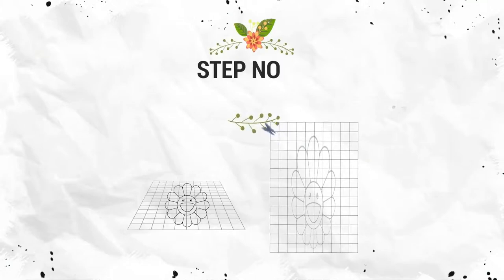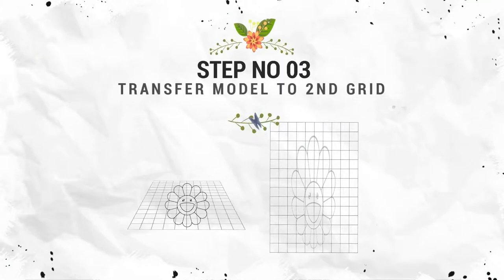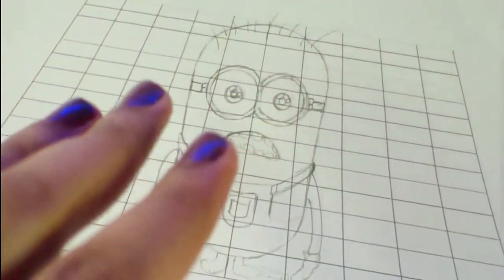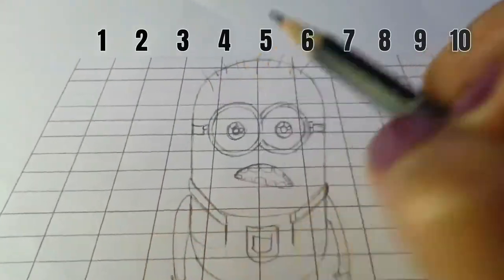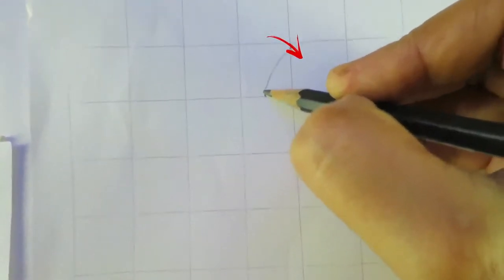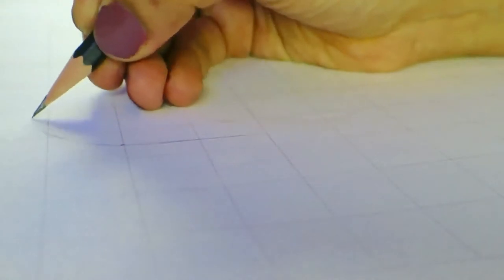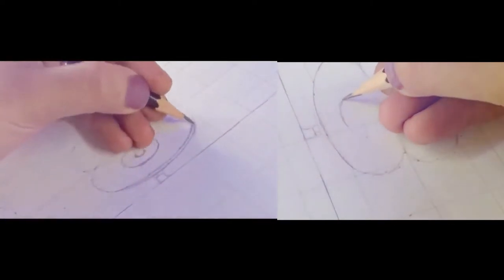The third step is to transfer the model onto the second grid. Use your model to create a sketch for the 3D illusion. For more accuracy, you can use your window of light or the screen from your PC. Transfer all the points where the model and grid intersect onto the second grid. Once you have a series of dots, try connecting them as smoothly as possible to recreate the model.